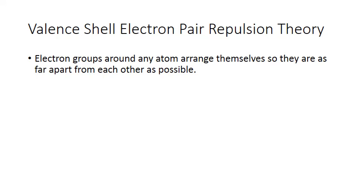According to VSEPR theory, electron groups around an atom arrange themselves so they are as far apart from each other as possible. This is to minimize electron repulsions.